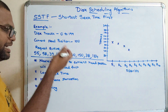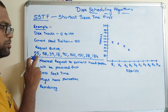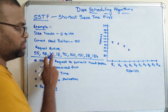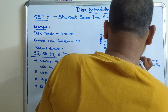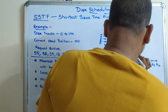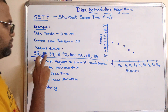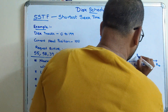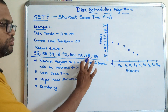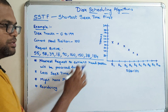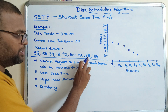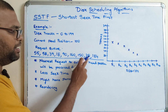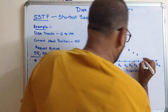Now, the nearest position to 55 is 39 itself. So request 5 is at 39. Next, obviously the nearest request is 38. Request 6 is at 38. From 38, the closest remaining request is 18, so the head moves to 18.